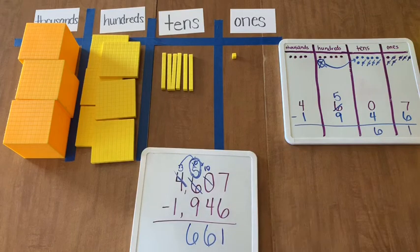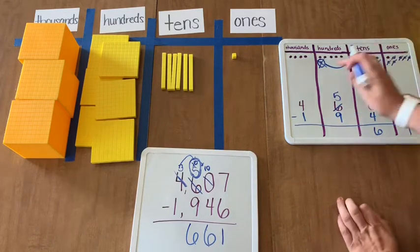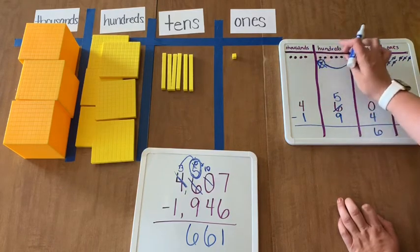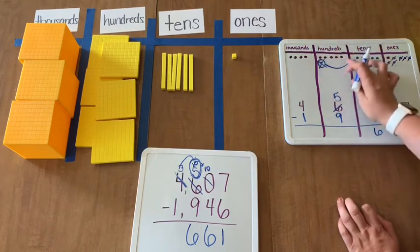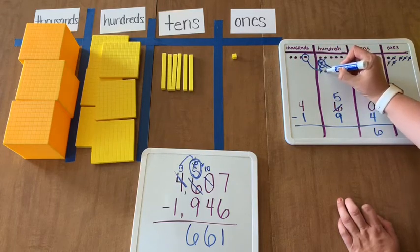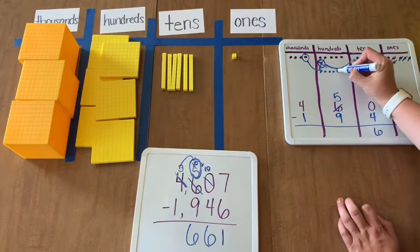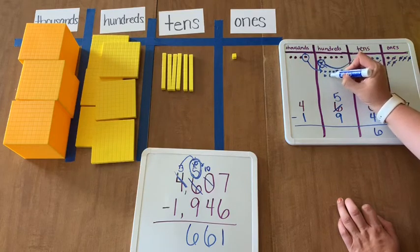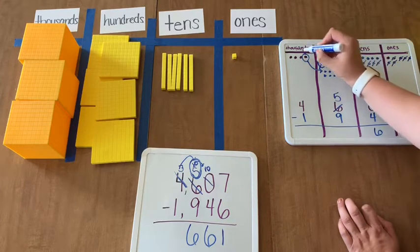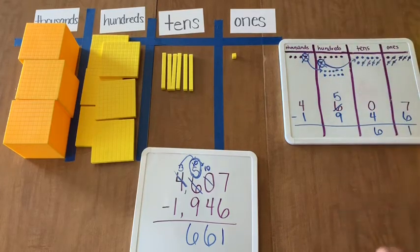Over here in the place value chart, we can do the same thing. We cannot subtract 5 hundreds minus 9. I can't cross out 9 because there are not 9 here. So I must regroup. 100, 200, 300, 400, 500, 600, 700, 800, 900, 1,000. That's how we got our thousand regrouped.